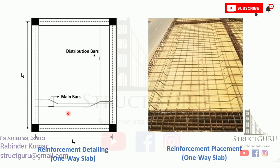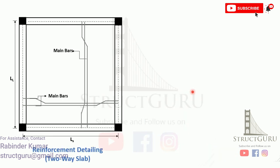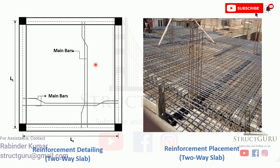The one-way slab will cause the slab to bend along one direction, i.e., the shorter direction. So the main reinforcement is provided along the shorter direction as shown. Similarly, in the case of a two-way slab, the bending action takes place along both directions, so the main reinforcement is provided both ways as shown.